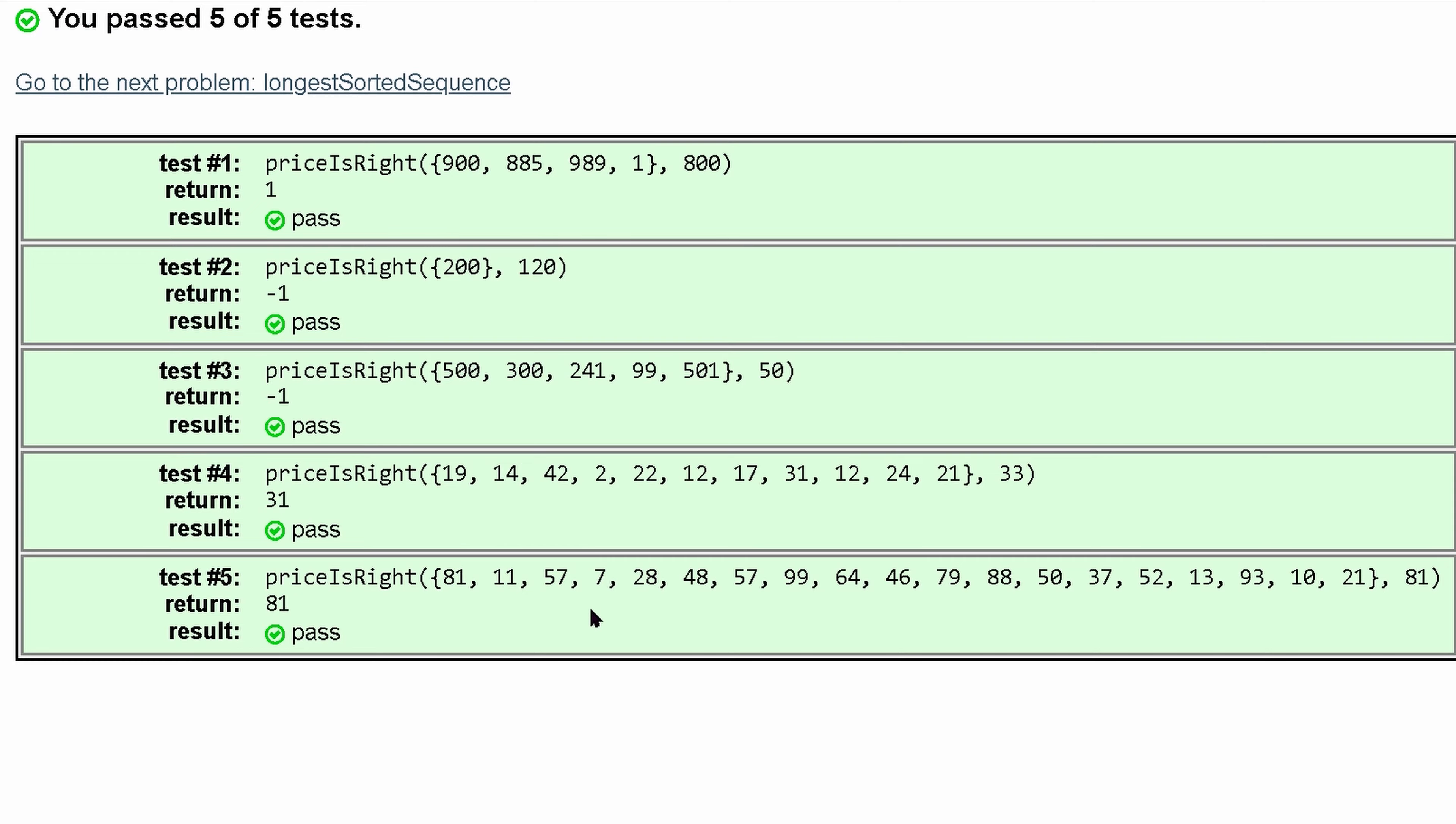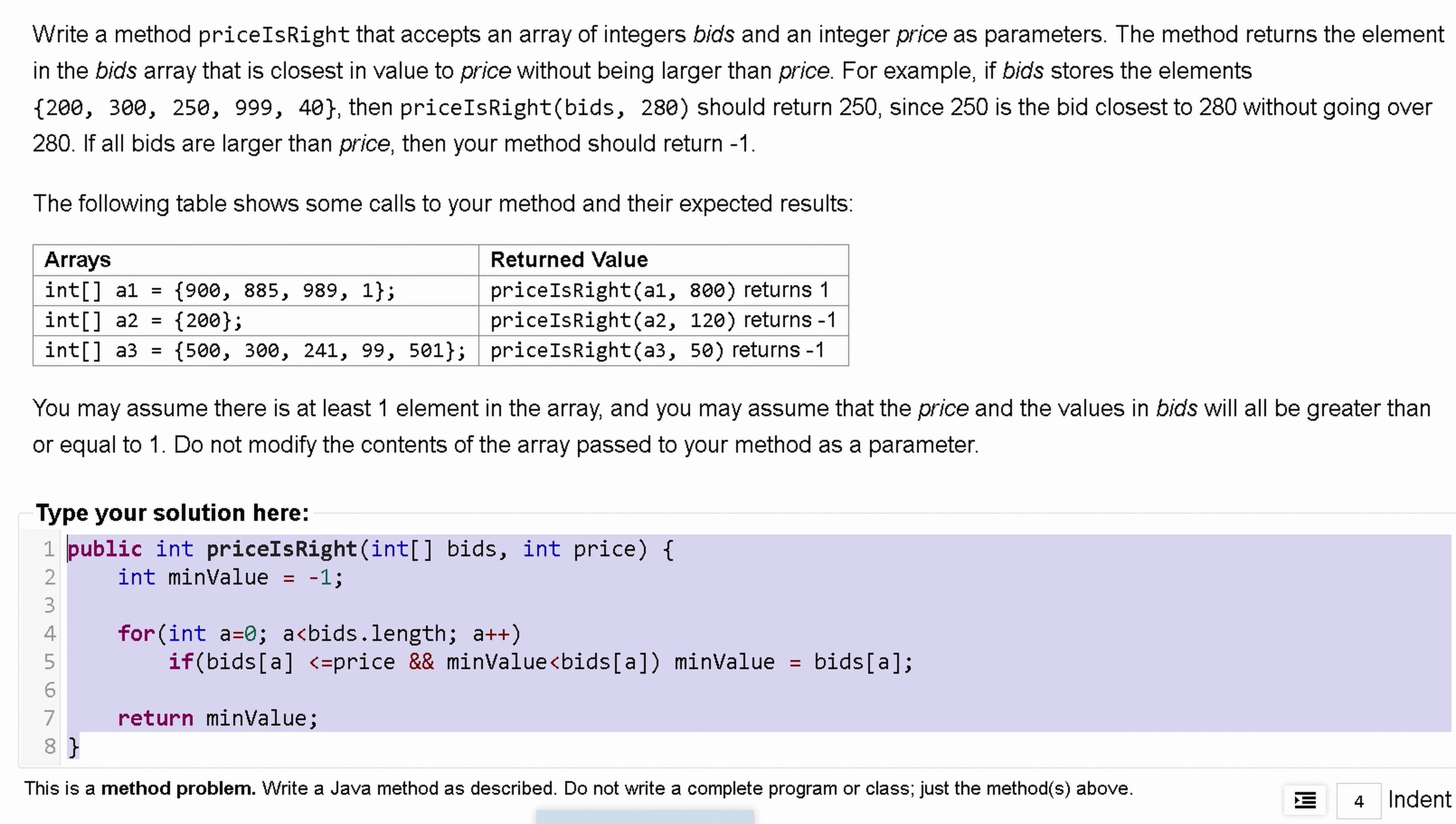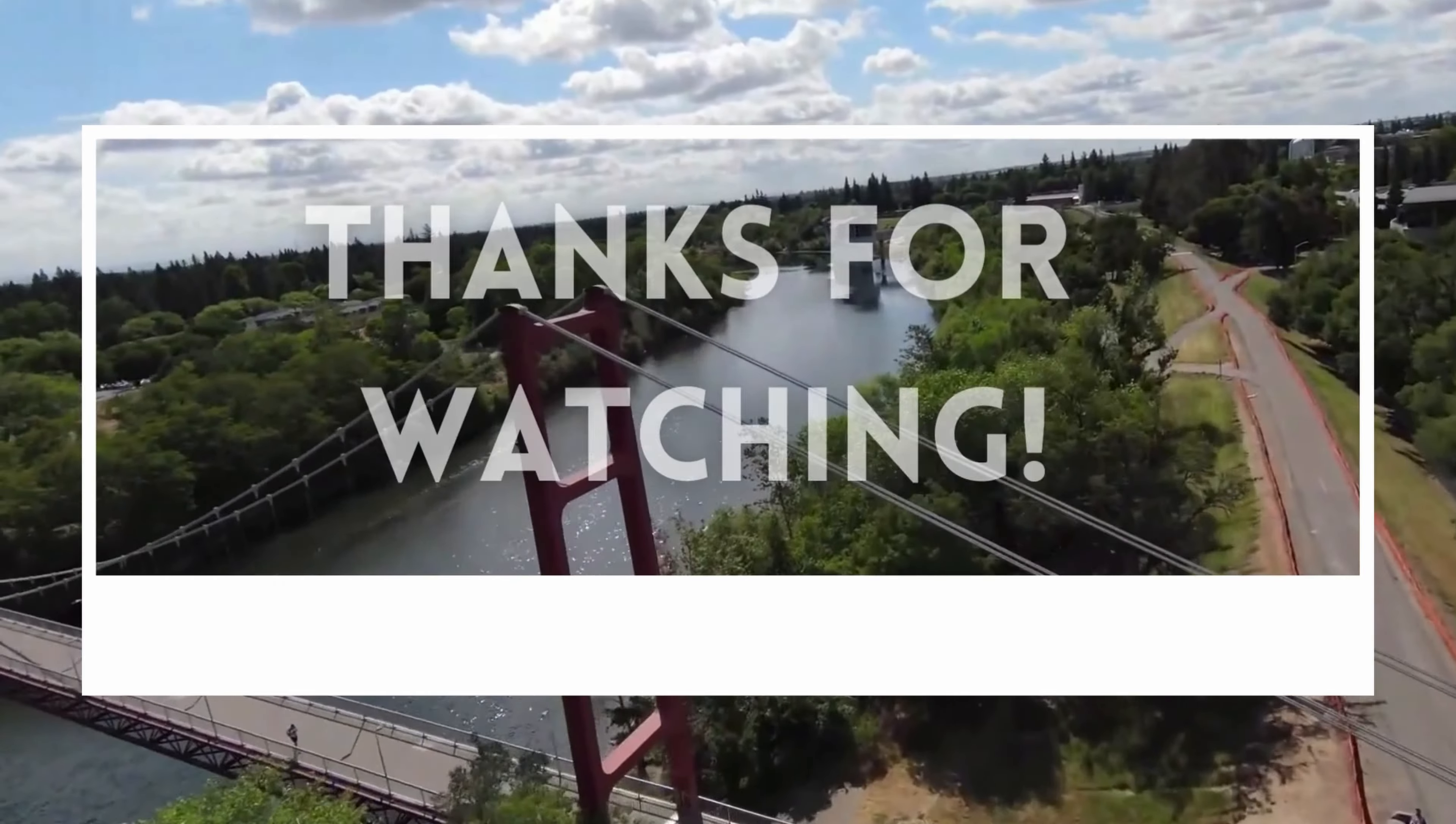And we passed five out of five tests. So we've completed this problem. That's how I would code for it. And that is all for this exercise 7.12 priceIsRight. Okay.